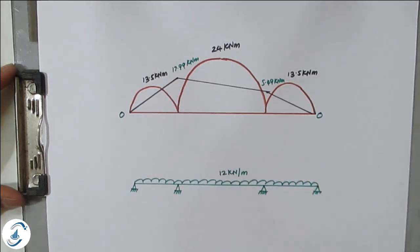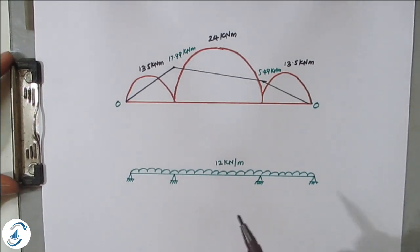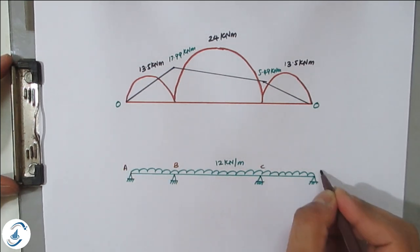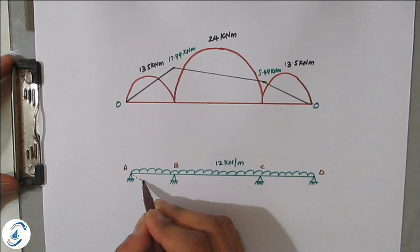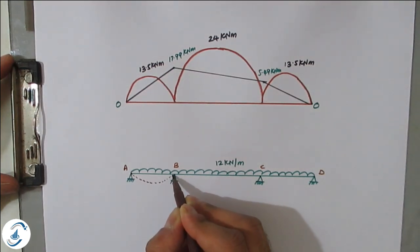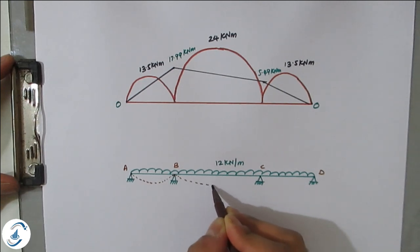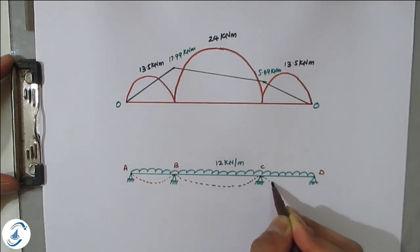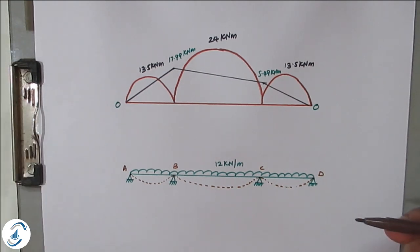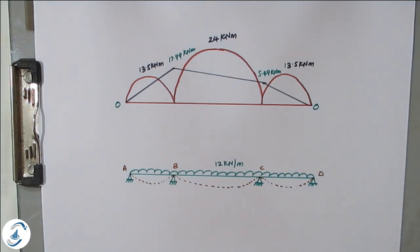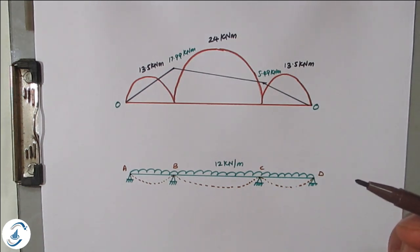The elastic curve can also be drawn: since all supports are hinged, the beam deflects with the sinking pattern at B and C. This is how to solve a moment distribution problem where both supports are sinking. Please like, share, and subscribe to All About Structural Analysis and Design and press the bell icon for the latest notifications.